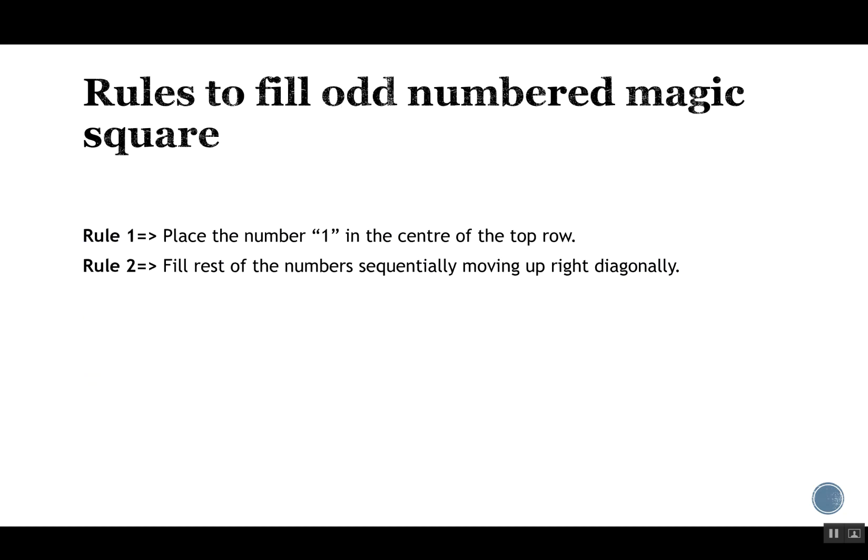Now we will see the rules to fill an odd numbered magic square. Rule number one, which is used only once, is: place the number 1 in the center of the top row. We use rule one only once because it gives us the starting point, and as we know each number can be placed only once.